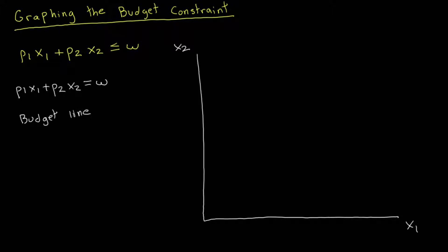To graph the budget line, let's first focus on the intercepts. The vertical intercept occurs when X1 equals 0. If we plug 0 in for X1 and solve for X2, we divide each side by P2 and get X2 = W/P2. This is intuitive: it's the scenario where the consumer does not purchase good 1 at all, and if they spend all their income on good 2, the quantity purchased equals income divided by the price of good 2.